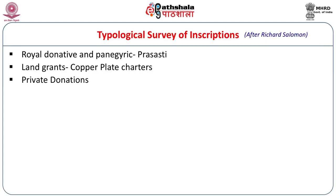The third category is private donations, where somebody has made a donation in their private capacity. There are several such small donative records — this can be of an image, a relic casket, or any other object. When we look at the Indian subcontinent we have more than one lakh inscriptions, and it is not viable to discuss all of them. So we will just take up different categories altogether.